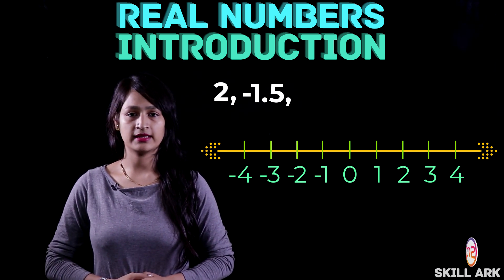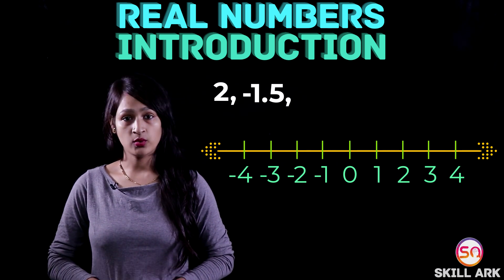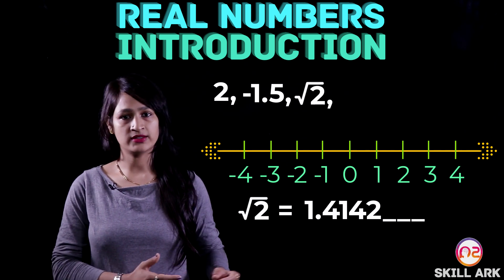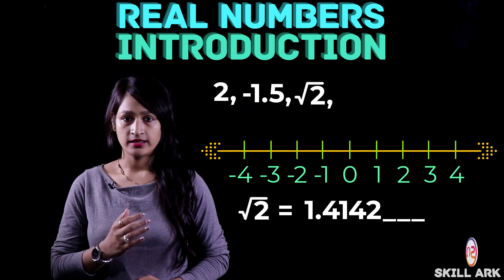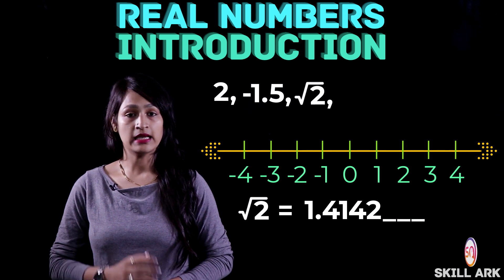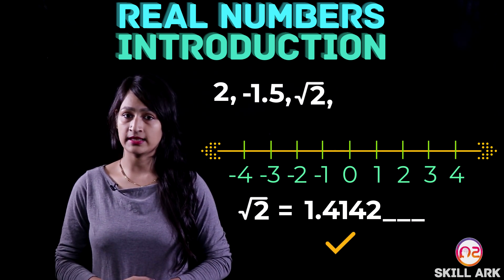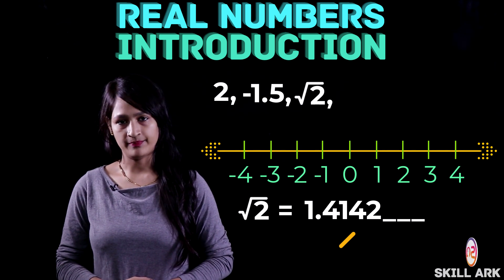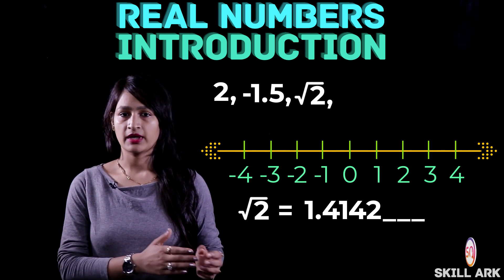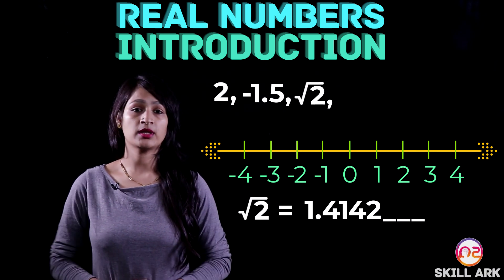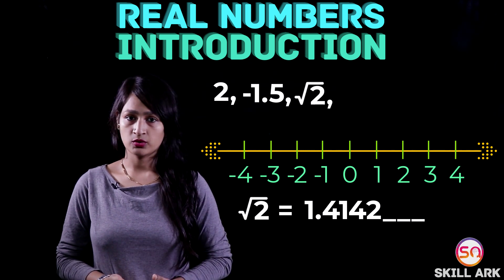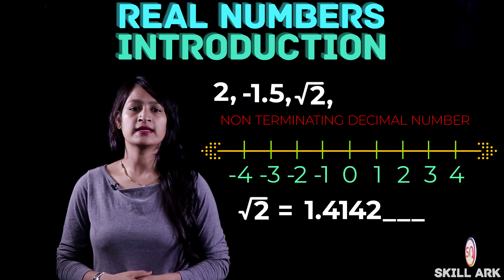Now let's take some numbers that may confuse you. We take root 2. Root 2 is 1.4142... and so on — the digits continue after the decimal point. You might wonder whether we can plot it or not. Yes, we can plot it on the number line. This is also a real number. But notice that the digits after the decimal point continue and do not terminate. This means it is a non-terminating decimal number.